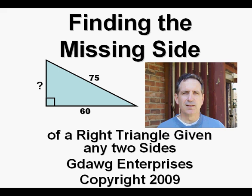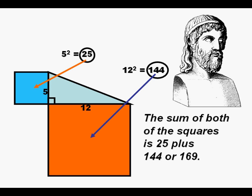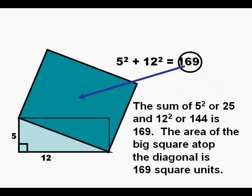Finding the Missing Side of a Right Triangle Given Any Two Sides. About 2,500 years ago, Pythagoras discovered that if you were to form squares from the sides of the two short sides of a right triangle, the sum of the areas of those two squares would be equal to the area of a square formed from the long side or hypotenuse of that right triangle.